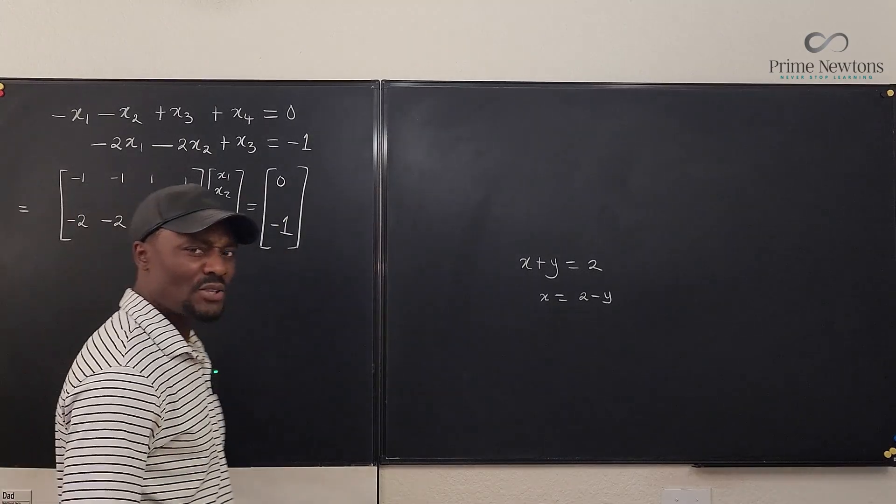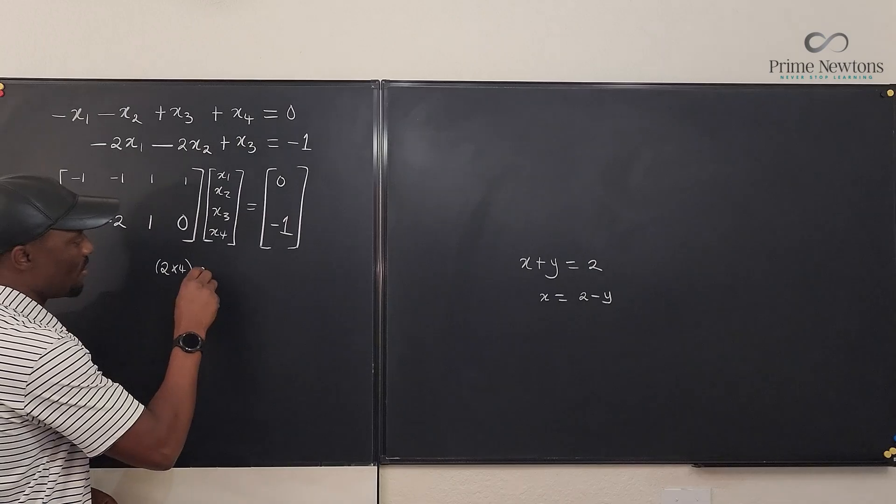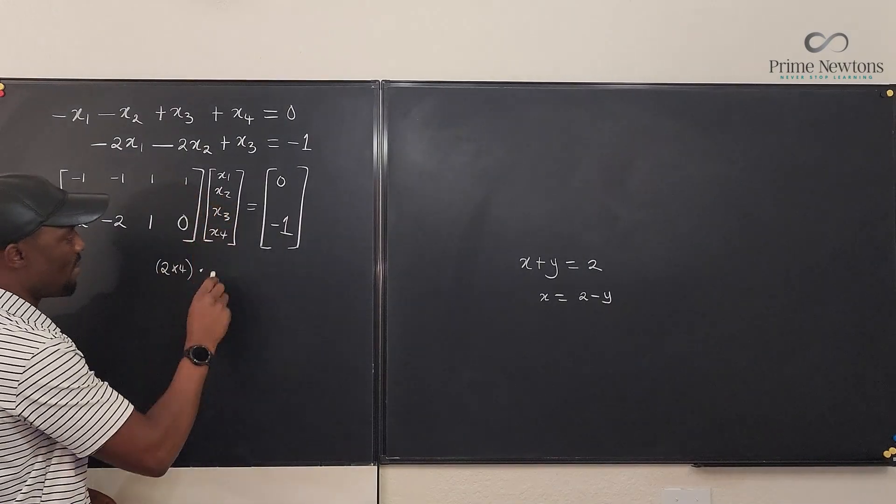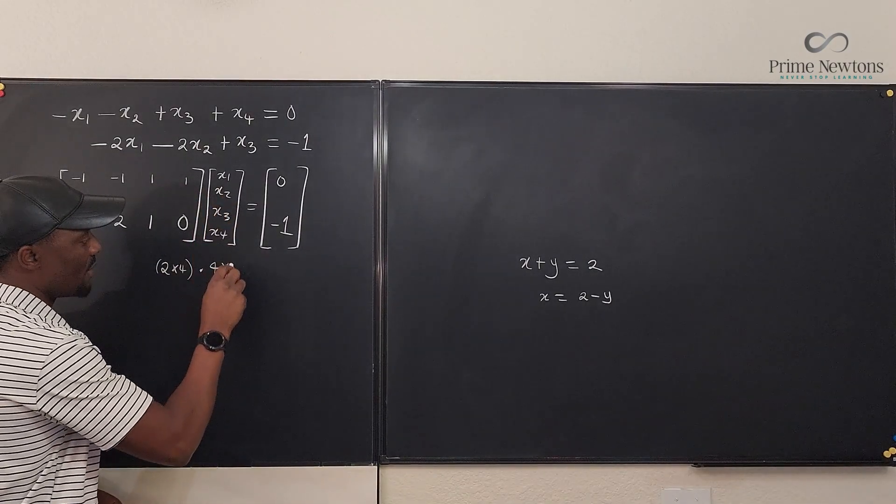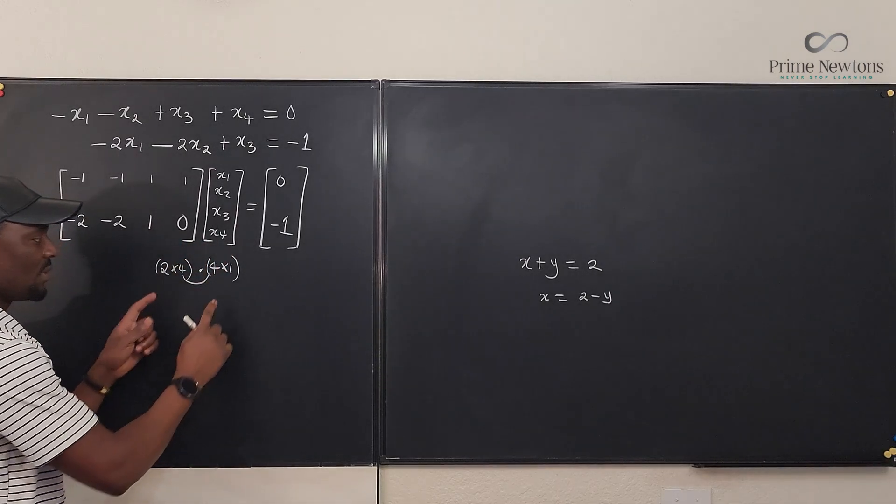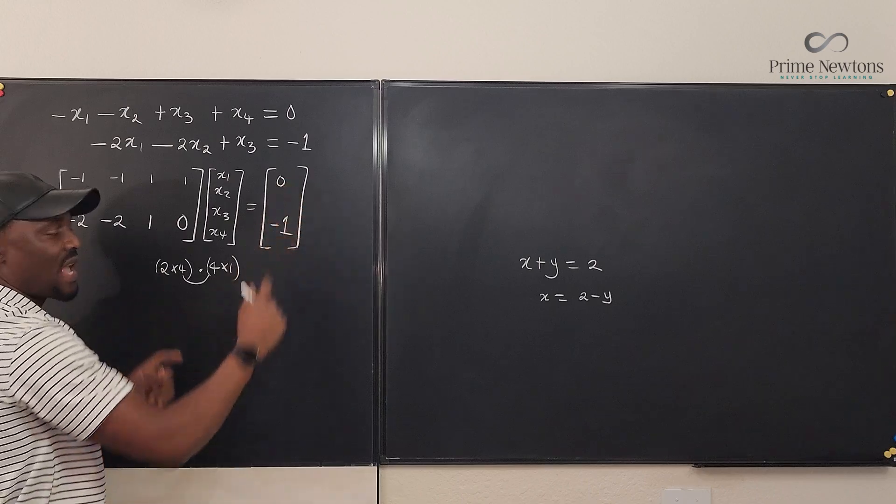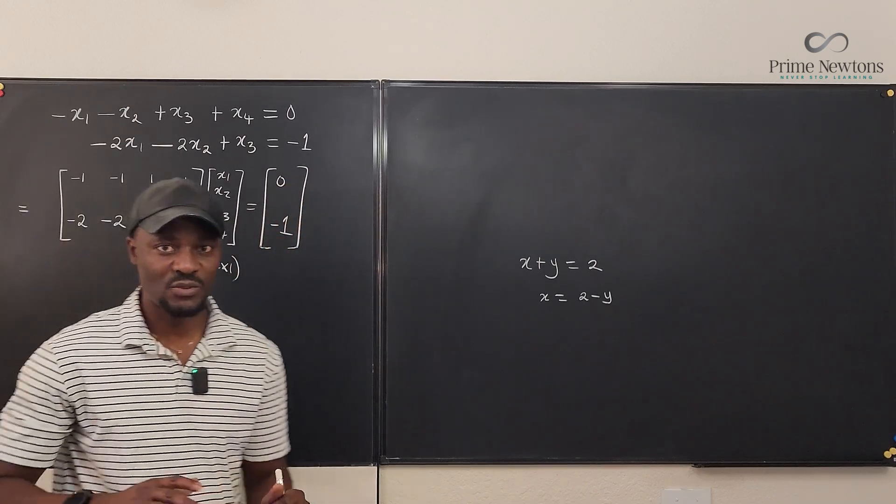Is this multiplication possible? Well, let's look at it. Two by four, we're multiplying it by a four by one. So these two are the same. Multiplication is possible. And what comes out of it is a two by one, which is what we have here. So this looks set to be solved.